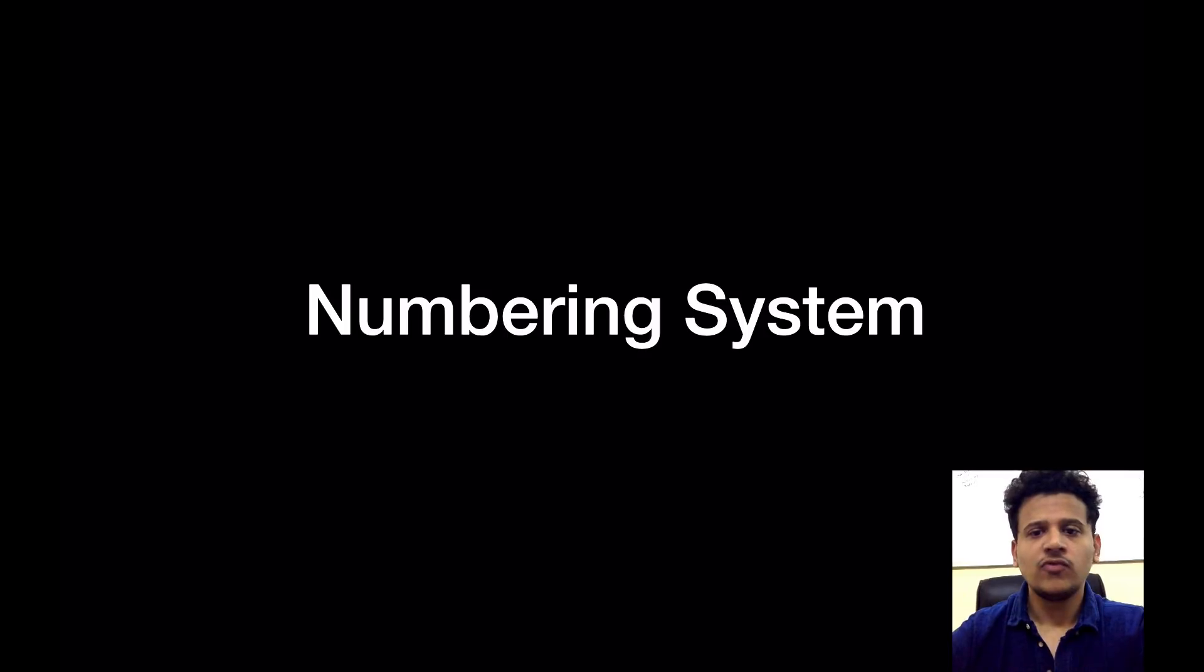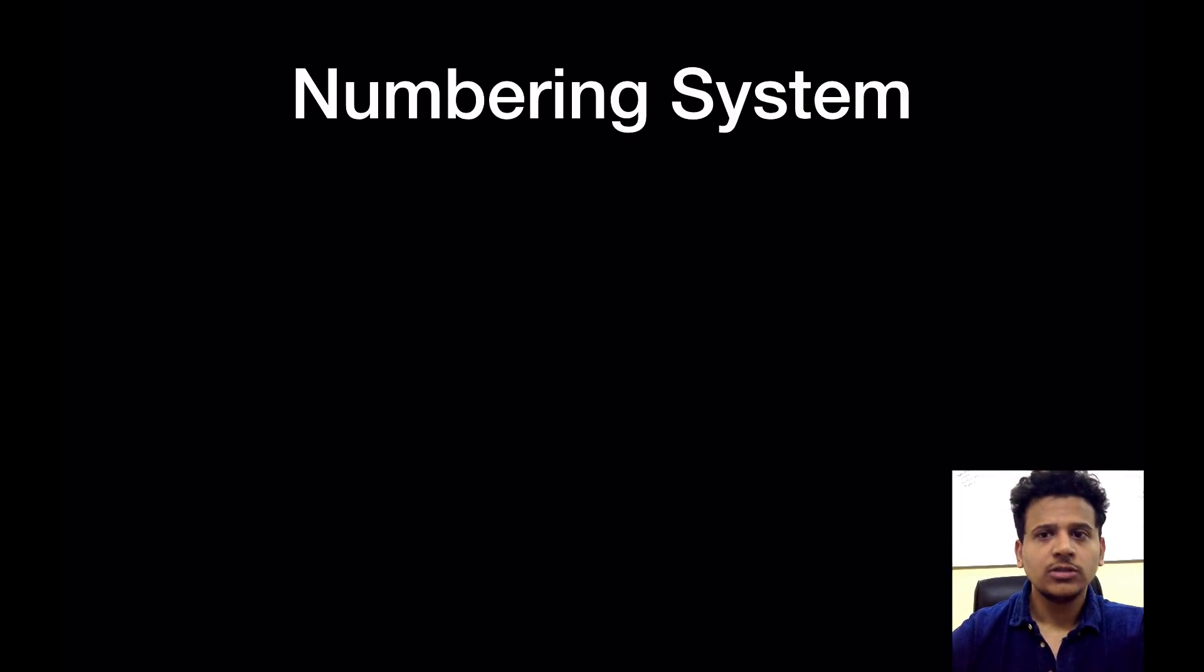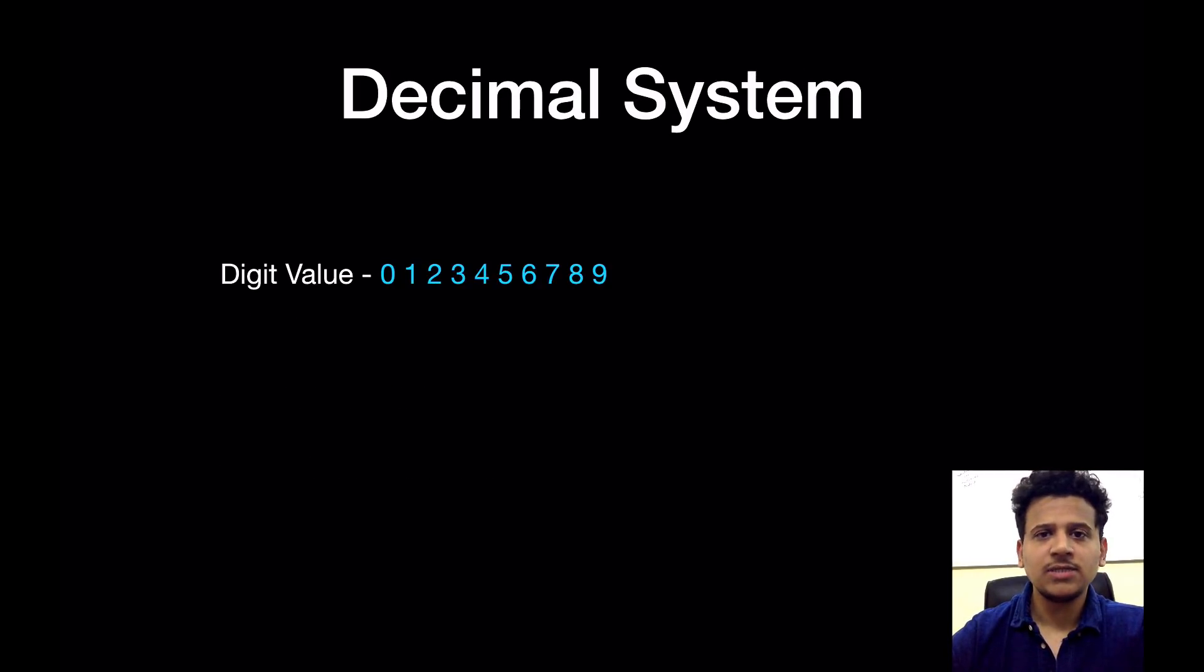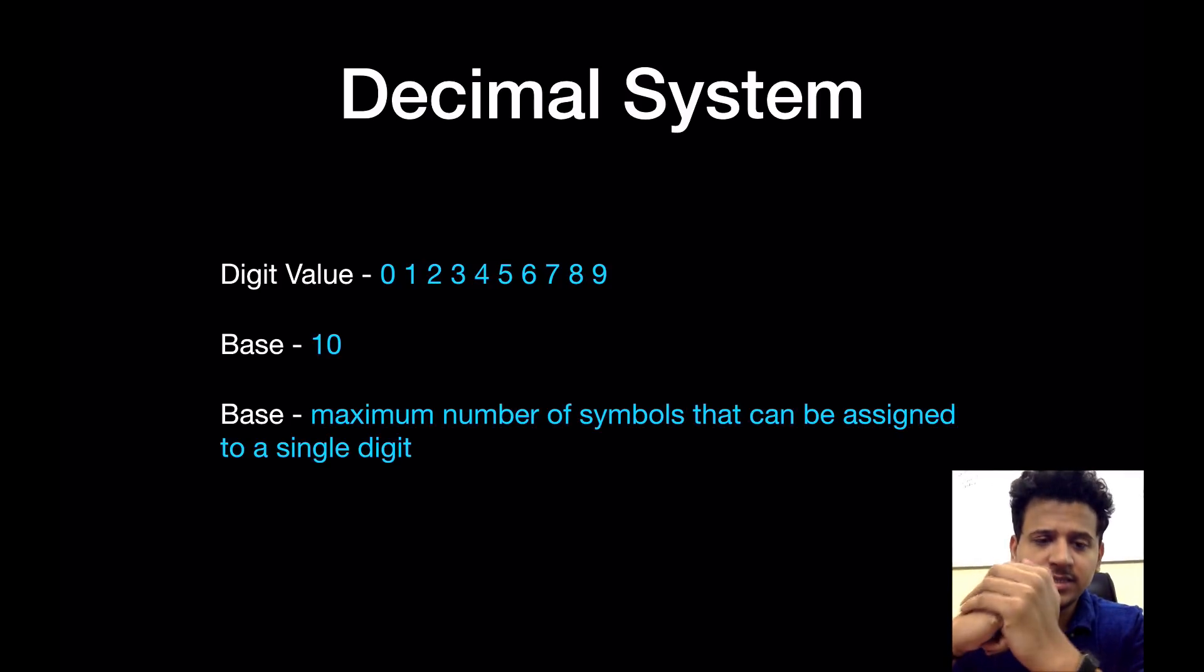Let's get started. First, numbering systems. The first numbering system is decimal system, next one is binary system, and the last one we are going to look at is hexadecimal system. The decimal system - the value for a digit is 0 to 9, so the base is 10. What do you mean by a base? Base is the maximum number of symbols that can be assigned to a single digit.